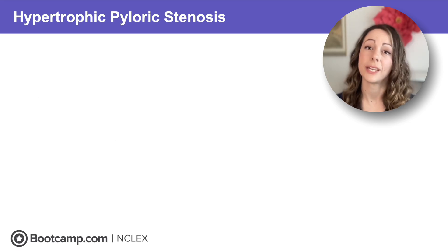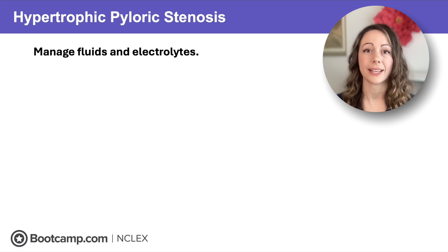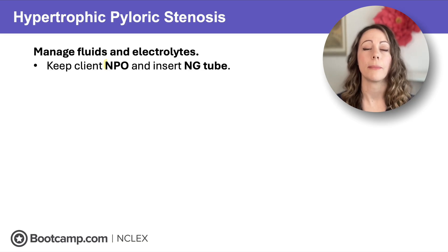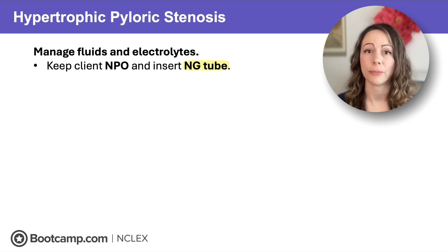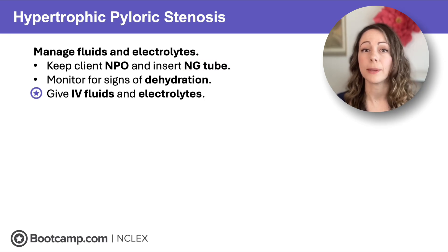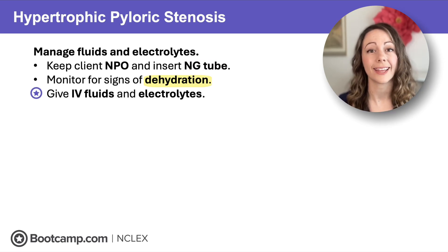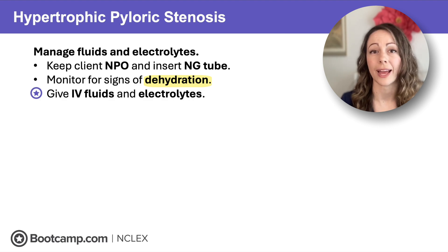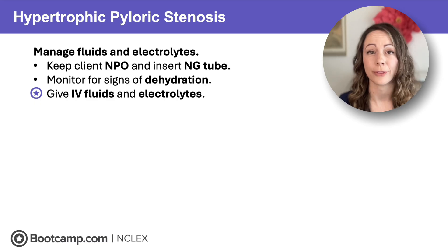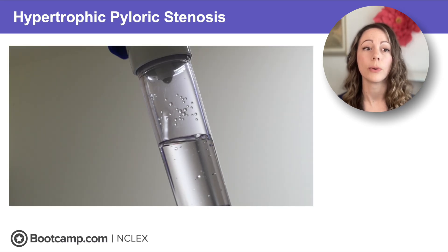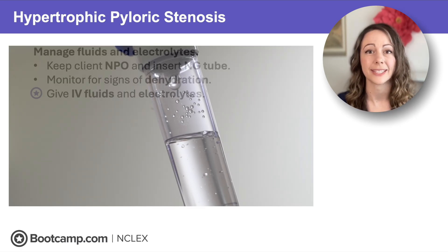What do we do for these kids? We need to manage fluids and electrolytes. Because they're vomiting all the time, we need to make them NPO. We don't want to add anything to that stomach, and we need to decompress the stomach by putting in an NG tube. NCLEX tip: if any child is vomiting, worry about dehydration and prepare to give IV fluids and electrolytes as needed.